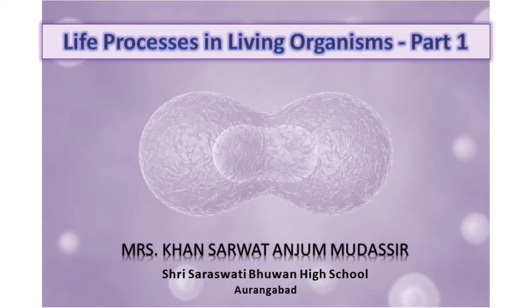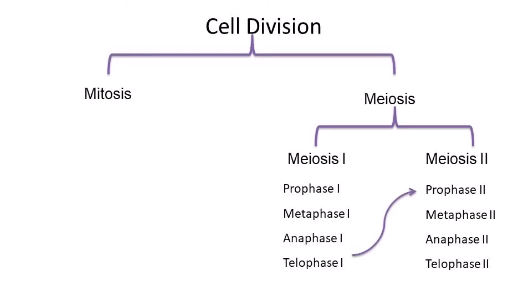Good morning students. Today we will see cell division. You all know that there are two types of cell division: mitosis and meiosis. The cell division which occurs in somatic cells is called mitosis, which we learned in our last lecture. Today we are going to see the second type of cell division, that is meiosis, which takes place in germ cells — that is in reproductive parts — and it gives rise to ovum and sperm.